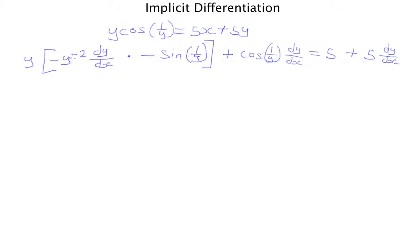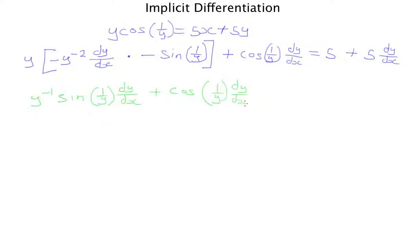y times minus y to the minus 2 gives y to the minus 1 — the negatives cancel. So I'm left with y⁻¹·sine(1/y)·dy/dx plus cosine(1/y)·dy/dx, and that equals 5 plus 5·dy/dx. All I did was simplify that part of the function.